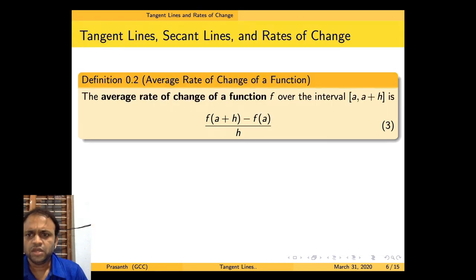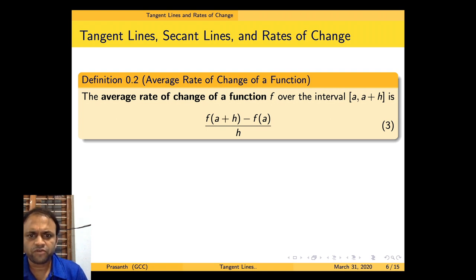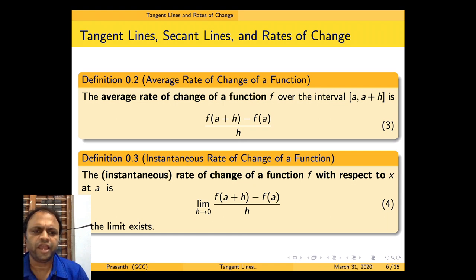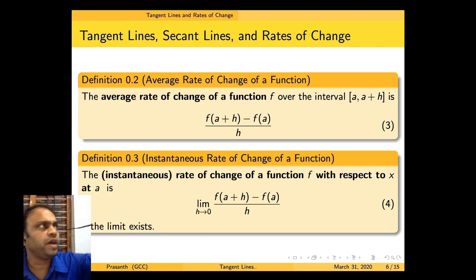We have two definitions. The average rate of change of a function f over the interval [a, a+h] is f(a+h) minus f(a) divided by h. The second is the instantaneous rate of change: the instantaneous rate of change of f with respect to x at a is the limit as h tends to 0 of f(a+h) minus f(a) divided by h, if the limit exists.